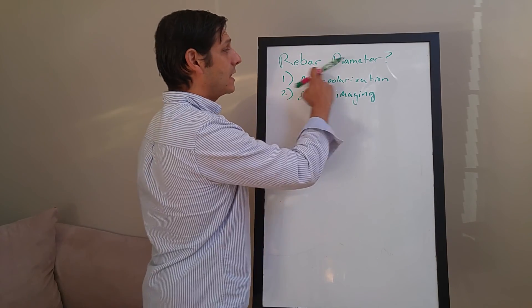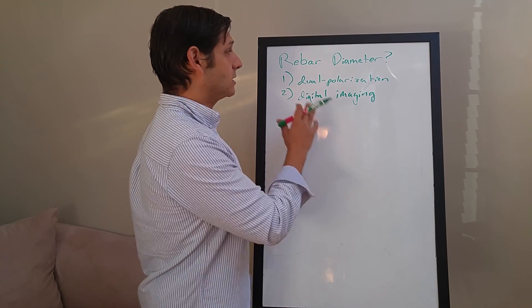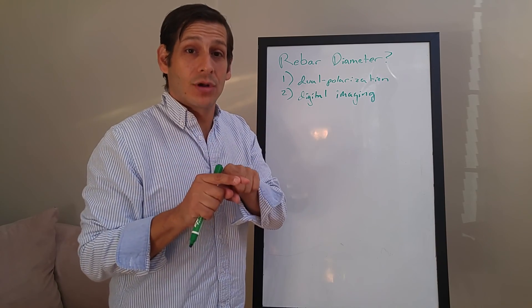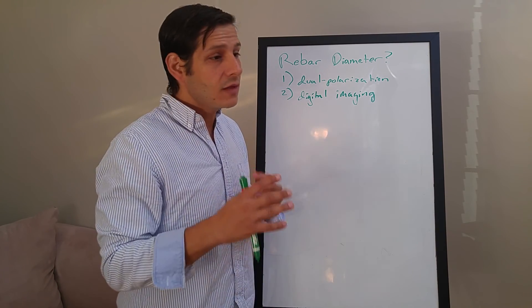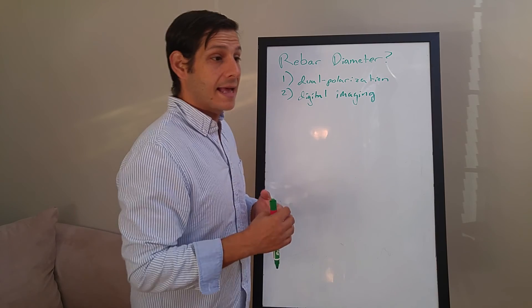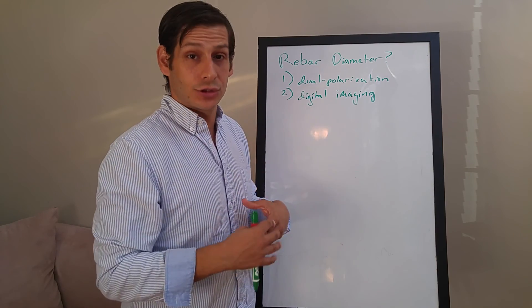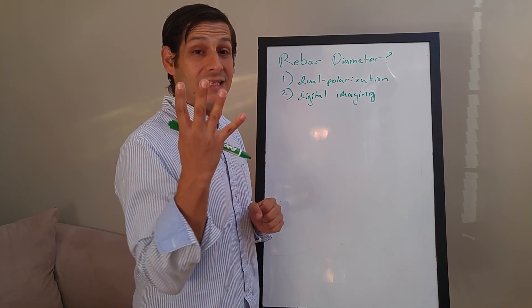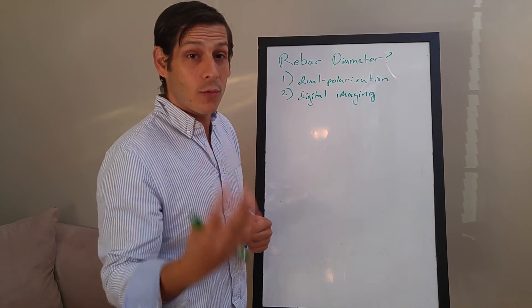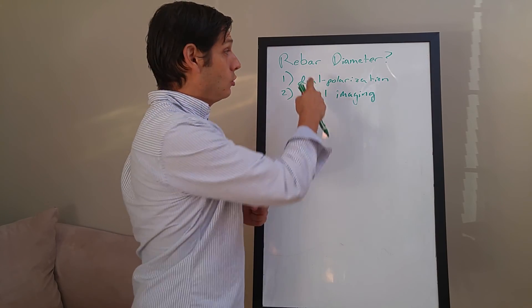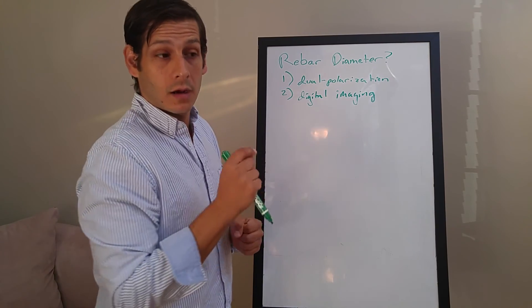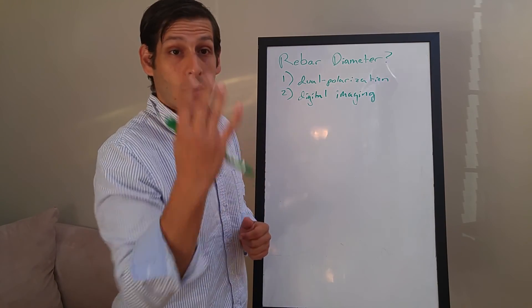So for today's lesson, we're going to ask this question: can ground penetrating radar evaluate rebar diameter embedded in concrete? This is something that's been evolving over the last eight years or so. As I've searched through the literature intensely, I found at least four proposals of how this can be done - at least four ways that people have proposed you can use GPR to identify rebar diameter of rebar embedded in concrete.